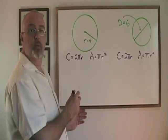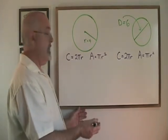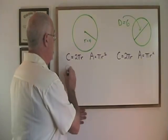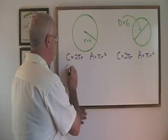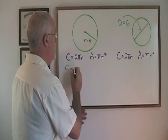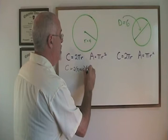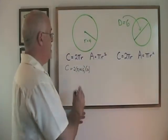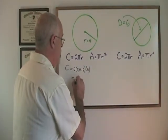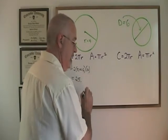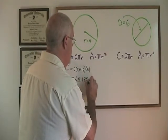We use the value 3.1416 for pi, so our circumference is going to be equal to 2 times 3.1416 times 4. And that gives us an answer of 25.1328.